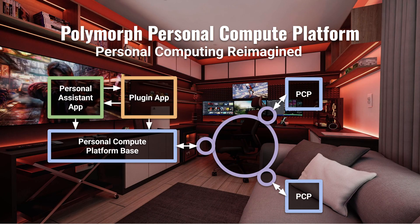The way the Polymorph Personal Compute Platform intends to address the target use cases is via this design. The main component is the Personal Compute Platform Base — an application that runs on the end user's computer and provides a scriptable interface to the platform. The platform base provides a lot of built-in functionality that can be activated through this scriptable interface. The platform base is also able to connect to a communication fabric via which it can communicate with platform base apps running on other people's computers, peer-to-peer style.